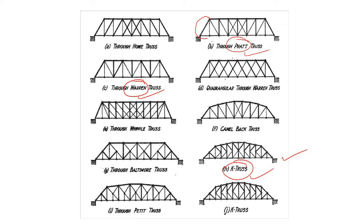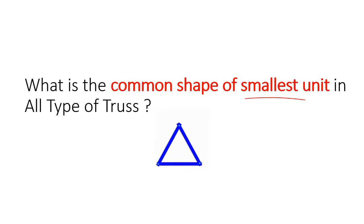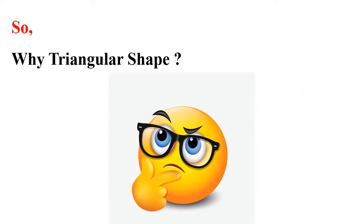So if I ask: what is the common shape of the smallest unit in all types of truss? The answer is: it is triangular.